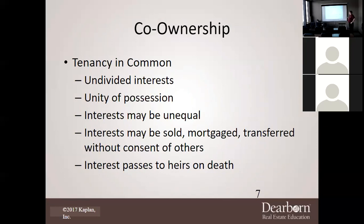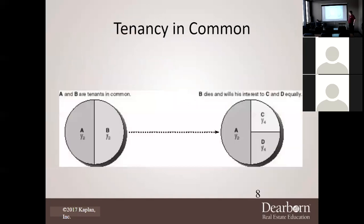Tenancy in common is an undivided interest with unity of possession, but interest may be unequal. You may own 25%, another person owns 10% — it's not going to be equal. Interest may be sold, mortgaged, or transferred without the consent of others, and the interest passes to the heirs on death. For example, if A and B are tenants in common owning 50-50, and B wills his interest to C and D, the ownership now becomes A, C, and D.